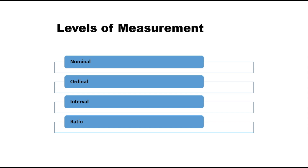So basically we have four types of data, or four levels of measurements. These are nominal, ordinal, interval, and ratio scale. We will discuss each one of them one by one.